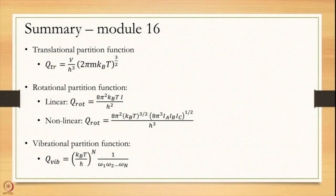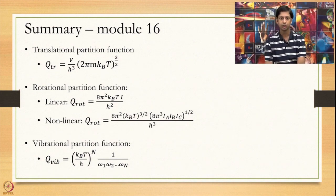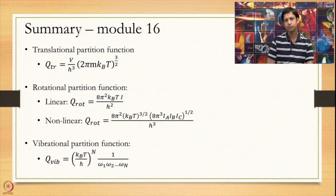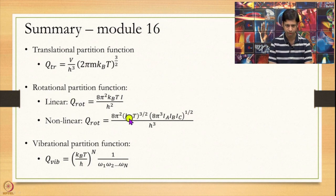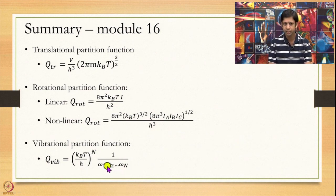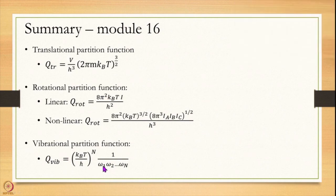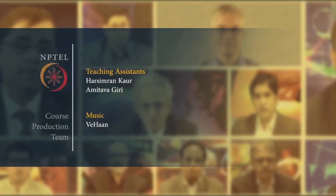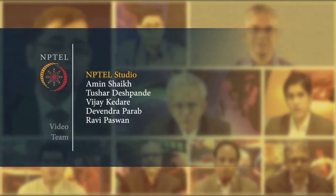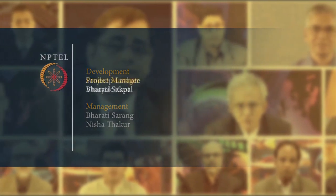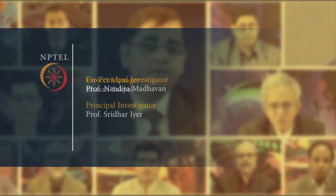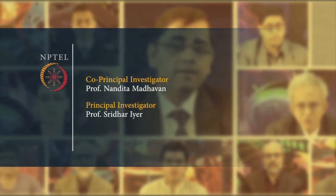In summary, today we looked at the three components of the partition function: translational, vibrational, and rotational, and derived specific formulas for each. The translational partition function is V(2πmk_BT)^(3/2) / h³. For rotational, the formula differs for linear versus non-linear molecules and includes the symmetry factor σ. For vibration, in general for m dimensions it is a product of k_BT over h-bar ω_i for each mode. For 1D it is simply k_BT over h-bar ω. Thank you very much.